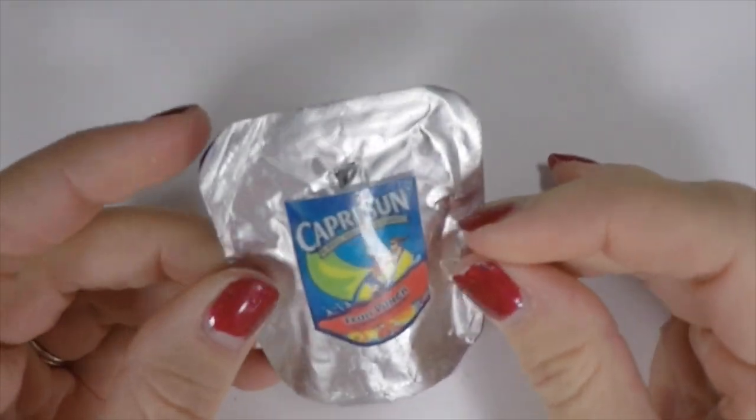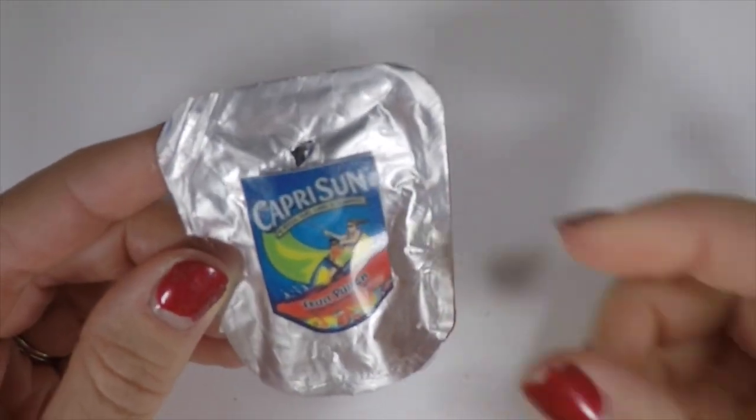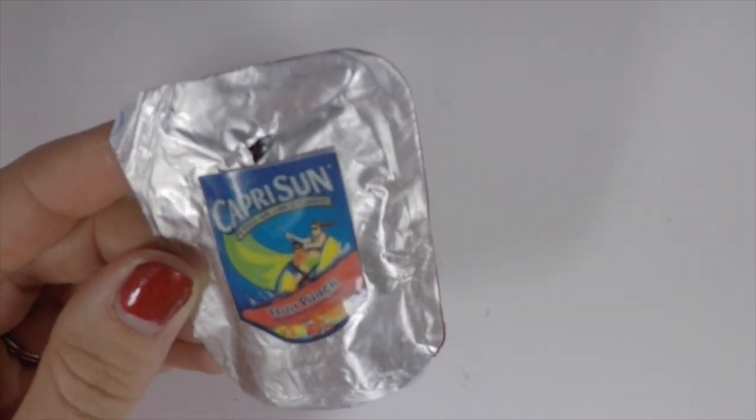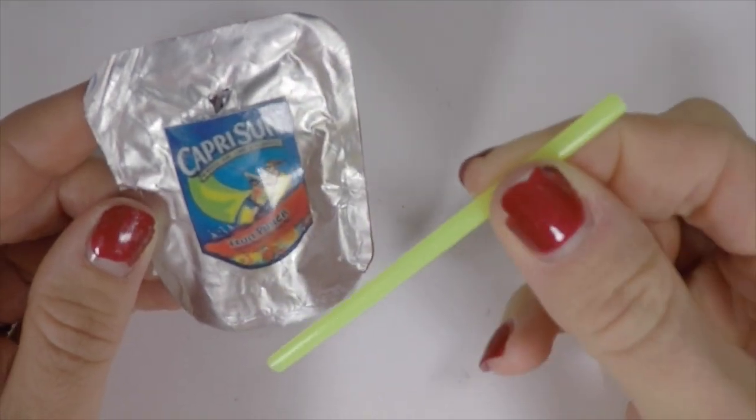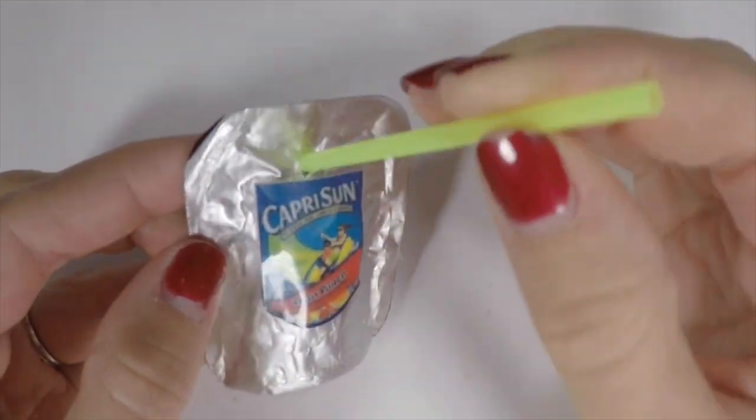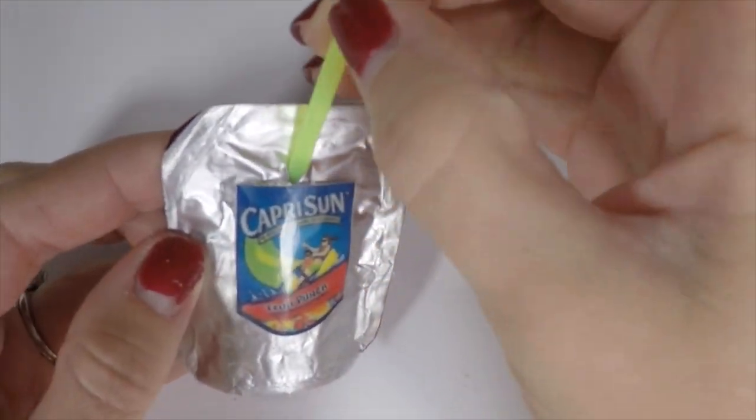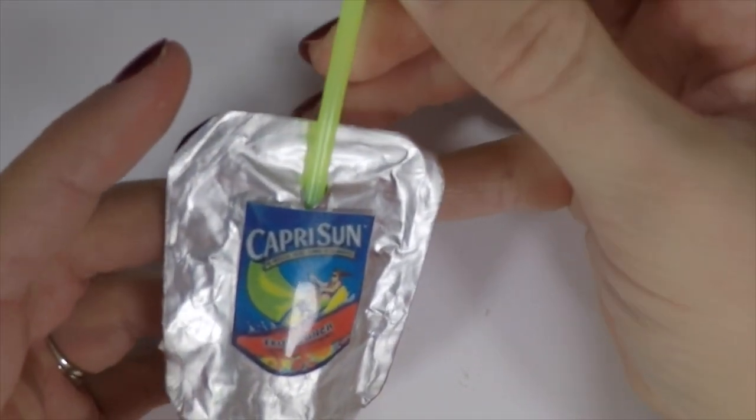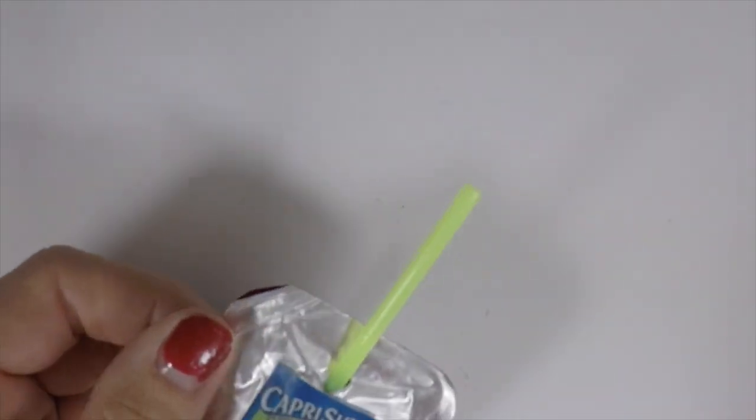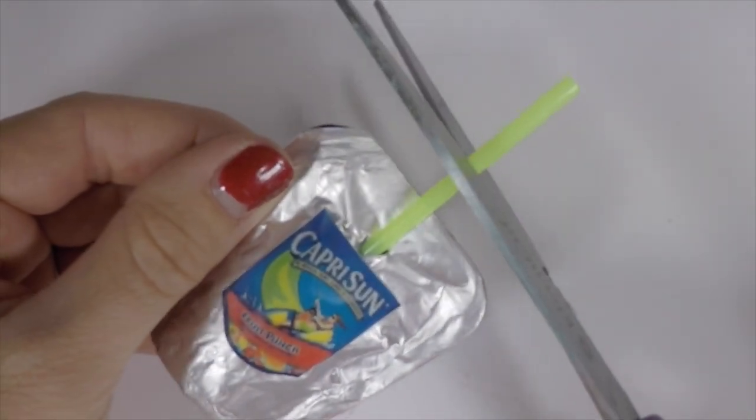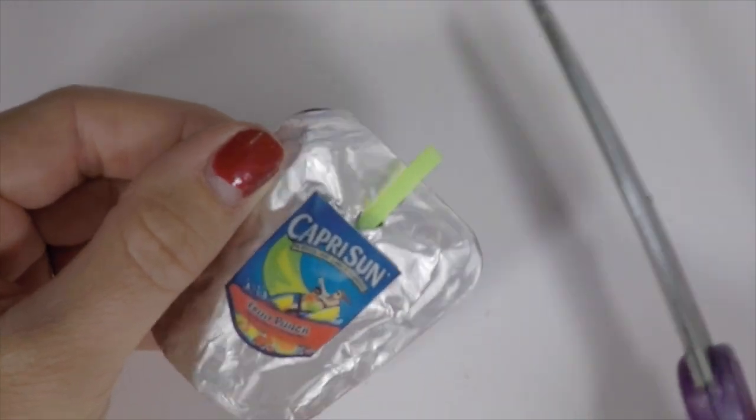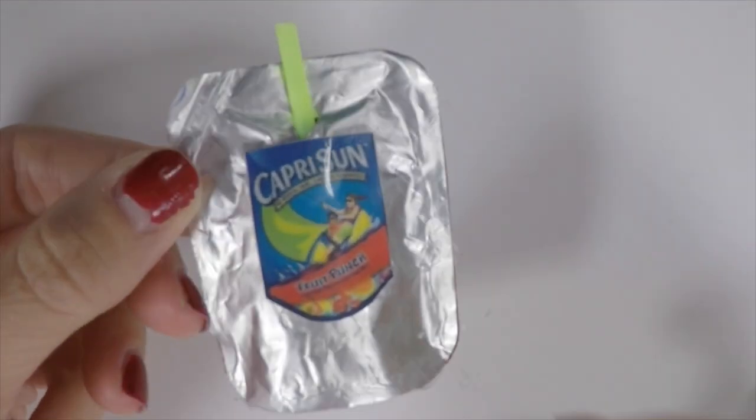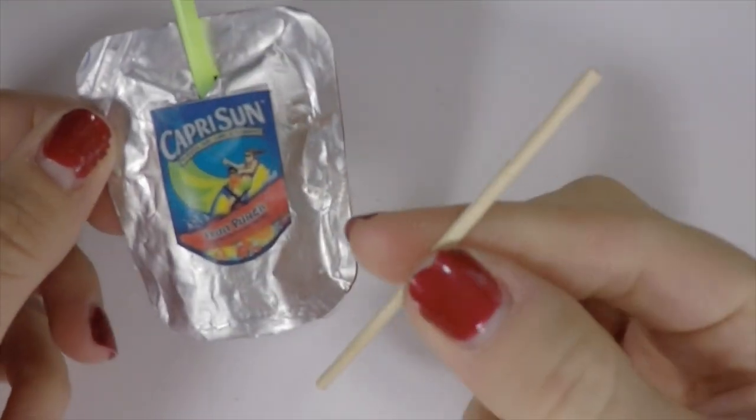Once the glue is dry, poke a little hole in it for the straw. I'm gonna use a miniature straw. You can find these at party stores, you can also use a coffee stirrer, or you can use an actual Capri Sun straw. Those are pretty tiny. If you can't find a straw, you can always use a toothpick and just paint it yellow. You also don't have to put it into the pouch, you can glue it right on the top so it looks like it hasn't been opened yet.